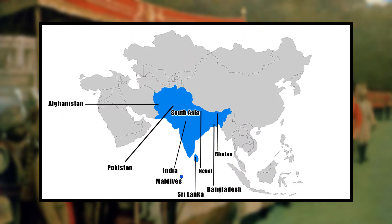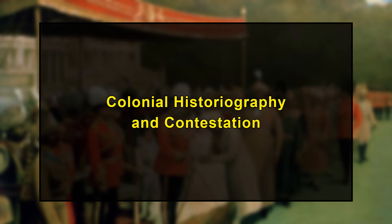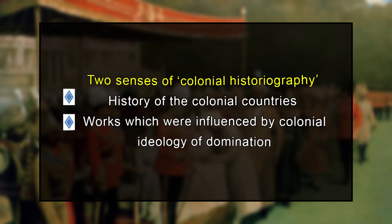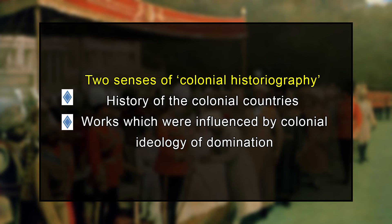In order to understand the nature of colonization in South Asia, it is important to engage with colonial historiography and the contestation it faced in later years. The term colonial historiography has been used in two senses: one relates to the history of colonial countries, while the other refers to works influenced by colonial ideology of domination. The practice of writing about colonial countries by colonial officials was related to the desire for domination and justification of colonial rule.